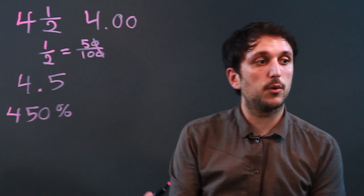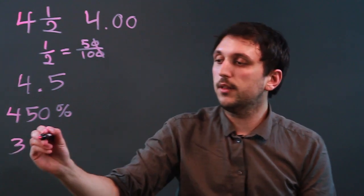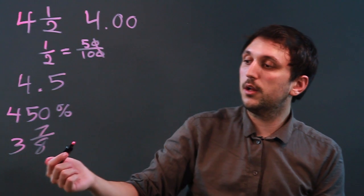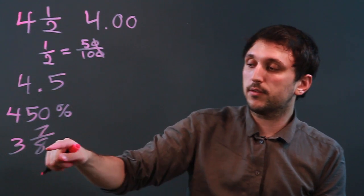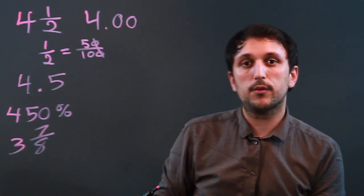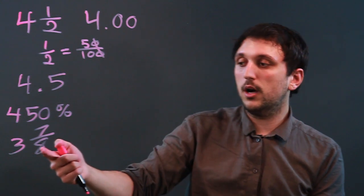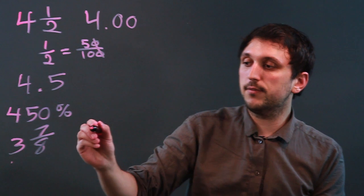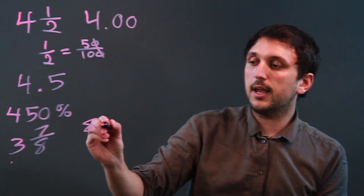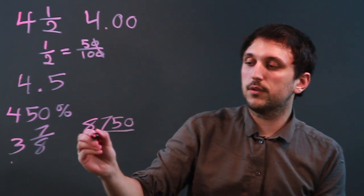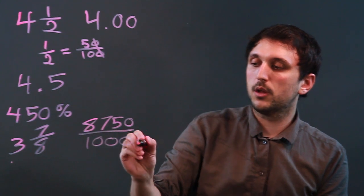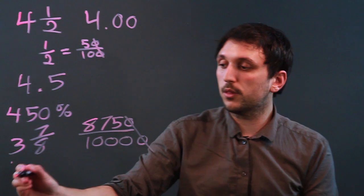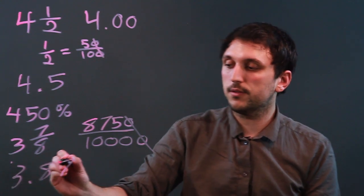So let's take another number. Let's try 3 and 7 eighths. The problem with 7 eighths is 8 has to go pretty far out before you get to a clean decimal. So 3 would just be 3.0, and 7 eighths is like saying 8,750 out of 10,000, or rather 875 out of 1,000. So it would be 3.875.